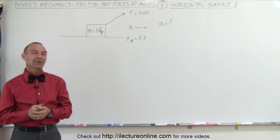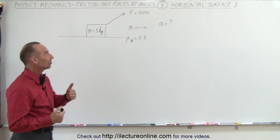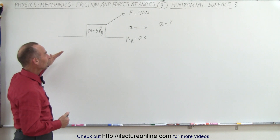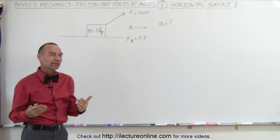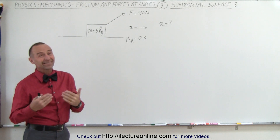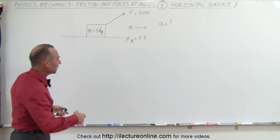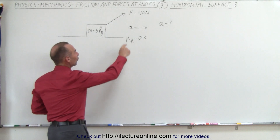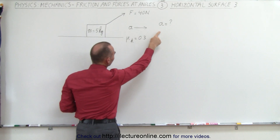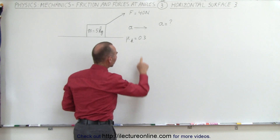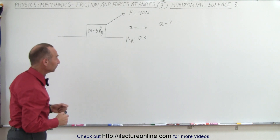Welcome to Electronline. Our third example is slightly different — in this case we're pulling up on the block rather than pushing down on the block. There shouldn't be a lot of difference, but it's nice to see an example. We're assuming the force is sufficient to cause the block to accelerate and we're looking for the acceleration of the block, assuming that the coefficient of kinetic friction is 0.3.